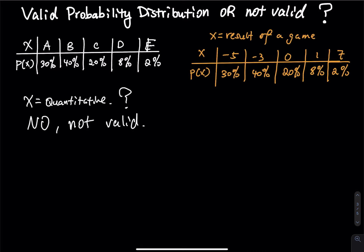Each percentage is between 0% and 100%. In decimal form: 0.3, 0.4, 0.2, 0.08, and 0.02 — they are all between 0 and 1. So this distribution is valid.